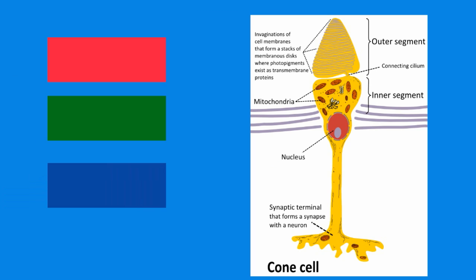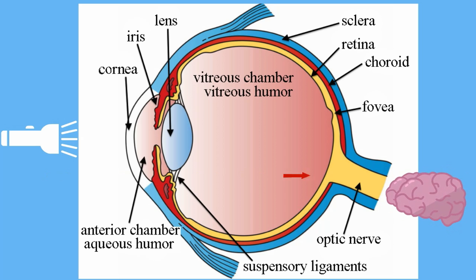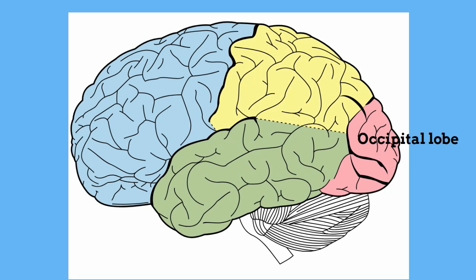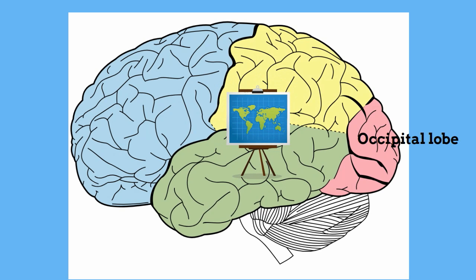After light strikes the rods and cones, nerve impulses travel down the optic nerve to the occipital lobe of your brain. At the occipital lobe, the reversed image is turned right side up, and it also combines the images from each eye.